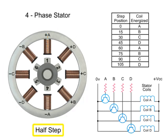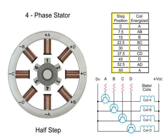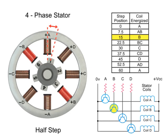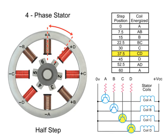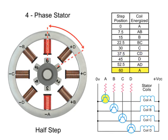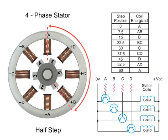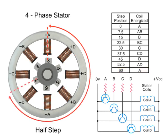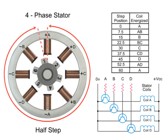For half-step mode, the stepper motor's resolution can be doubled by altering the switching of coils. Half-stepping occurs when one winding is energized and then two windings are energized alternately, causing the rotor to rotate at half the distance. Switching coils in this combination will rotate in the reverse direction. As you can see in this example, 48 steps are required to make a full rotation at 7.5-degree increments.